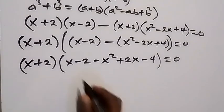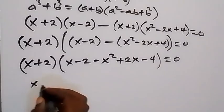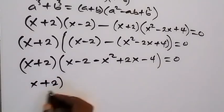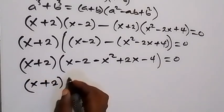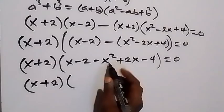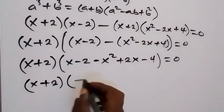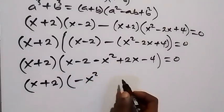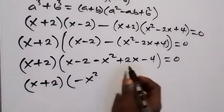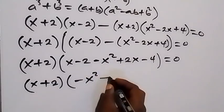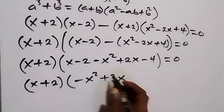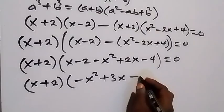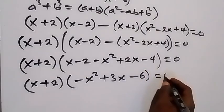We can simplify further. We have (x + 2) multiplied by: x minus x squared gives minus x squared; then x plus 2x gives plus 3x; and minus 2 minus 4 gives minus 6. So we get (x + 2)(minus x squared plus 3x minus 6) equals zero.